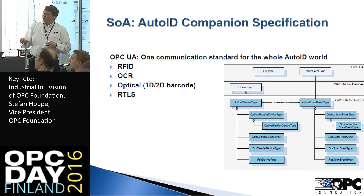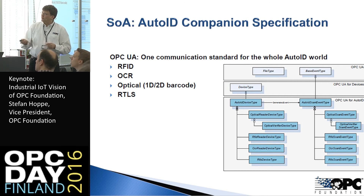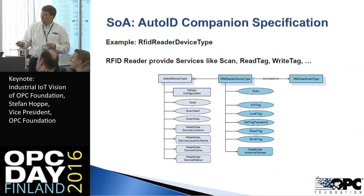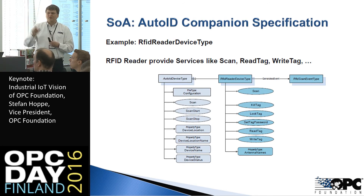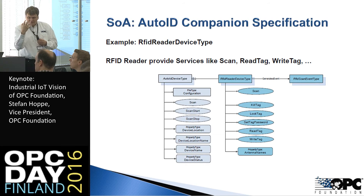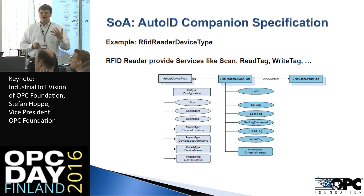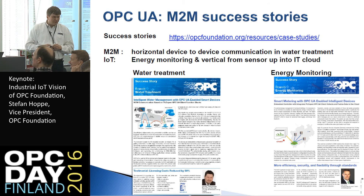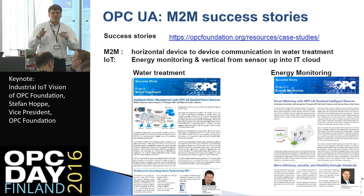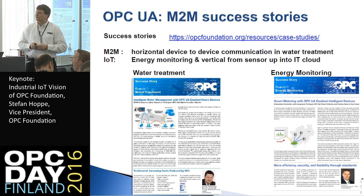Interestingly, all these devices — not only RFID readers, but also 1D and 2D barcode readers — have method calls: read tag, write tag, kill a tag, and so on. It's not a bit where you write a bit and then the device knows what to do. It's a name you can call — it has semantic, it has a meaning. Again, web service calls are our future. There are a couple of success stories — for horizontal communication, water treatment, energy monitoring — all these devices talk services to each other via OPC method calls.